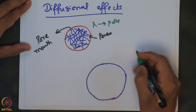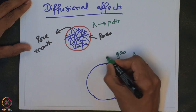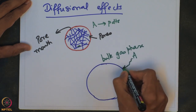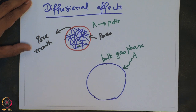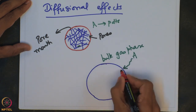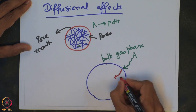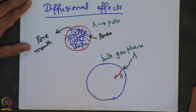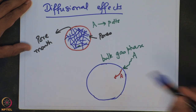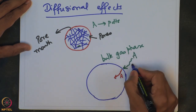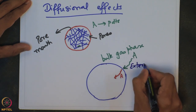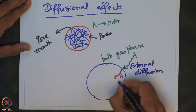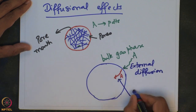Here is a schematic of this process. Species A, which is present in the bulk gas phase, undergoes diffusion and reaches the outer surface of the pellet. Following which, the species has to do an internal diffusion, which happens inside the catalyst pellet till it reaches the surface where the actual reaction happens. Classically, this diffusion in the bulk phase is termed as external diffusion, and the diffusion through the pellet is called internal diffusion.